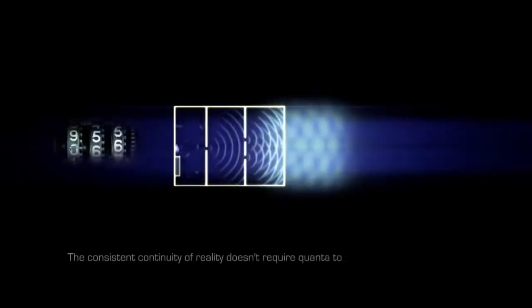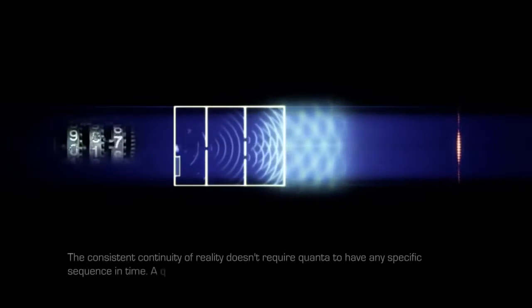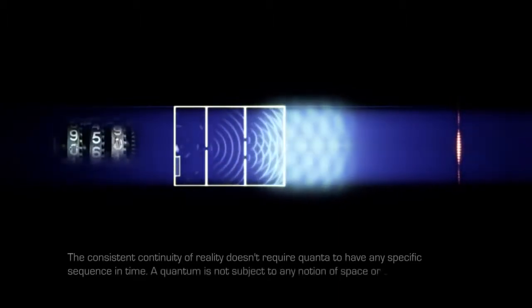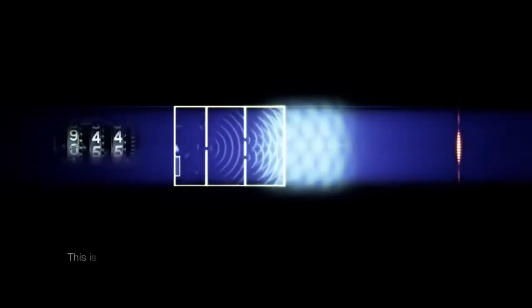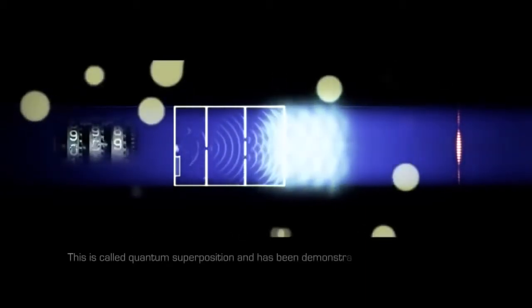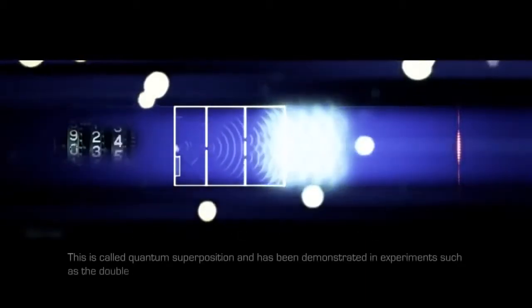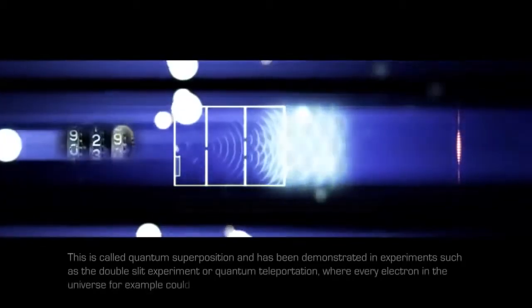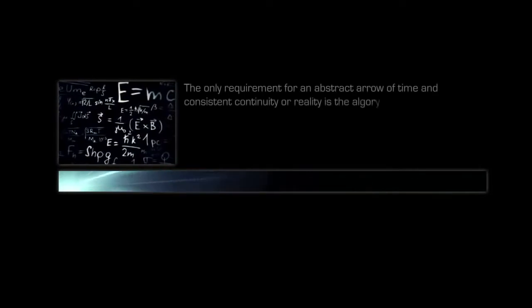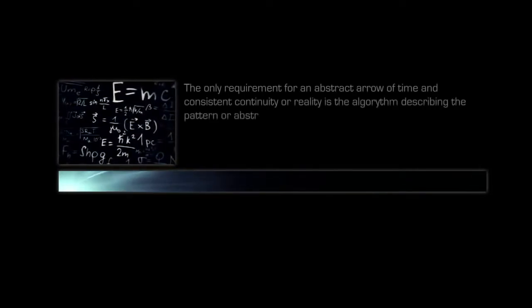The consistent continuity of reality does not require quanta to have any specific sequence in time. A quantum is not subject to any notion of space or time and can occupy all of its possible quantum states simultaneously. This is called quantum superposition and has been demonstrated in experiments such as the double slit experiment or quantum teleportation, where every electron in the universe, for example, could be the exact same one. The only requirement for an abstract arrow of time and consistent continuity is the algorithm describing the pattern or abstract sequence of vectors.